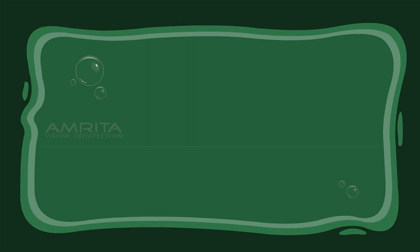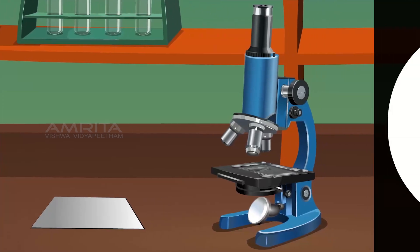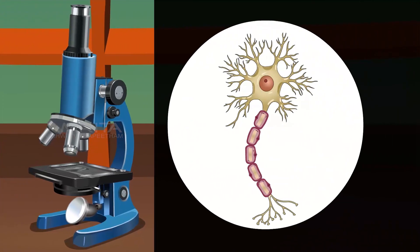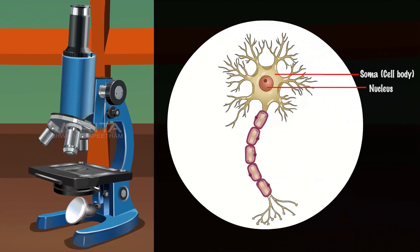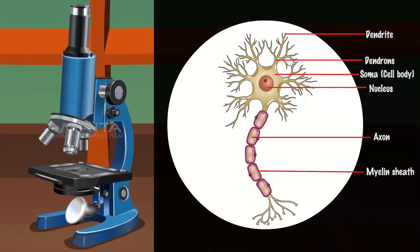Observations: The large body of the neuron is called the soma, which contains the cell's nucleus. The cell body branches out to form the dendrons. These dendrons further branch out to form fibres of different lines called dendrites. There is also a single long fibre projecting from the cell body called the axon. The axon is covered by the myelin sheath.